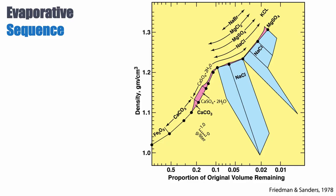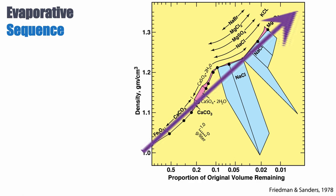Let's look at the chemistry of seawater during evaporation. This has been known for a long time — here's an example from Friedman and Sanders, published in 1978. On the vertical axis you have the density of the fluid in grams per cubic centimeter, and on the horizontal axis, the proportion of the initial fluid remaining. Starting at about 50% seawater remaining and going down to about 1%, we're concentrating ions as the density increases dramatically from 1.0 to 1.3. The precipitates follow a logical, consistent sequence with different abundances.